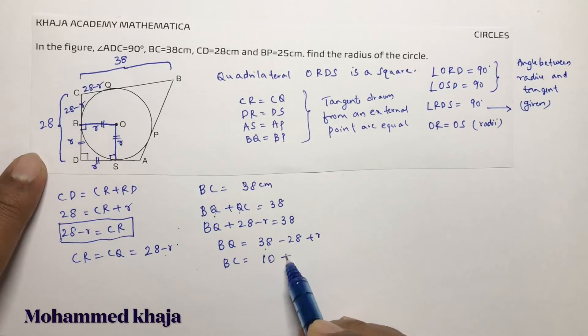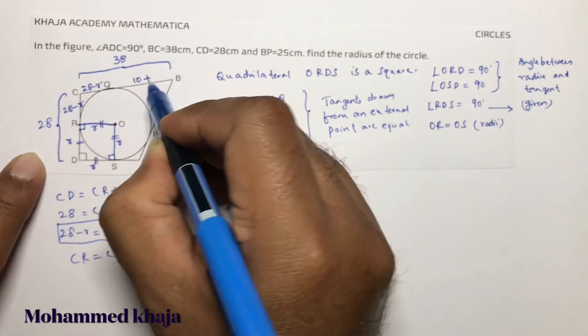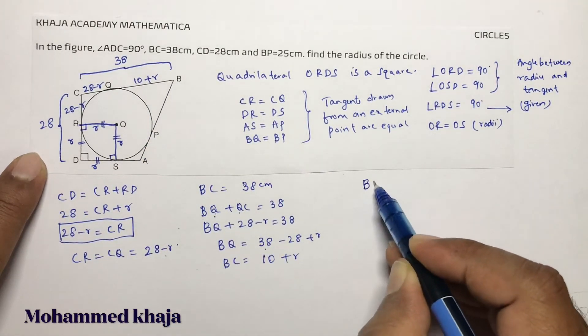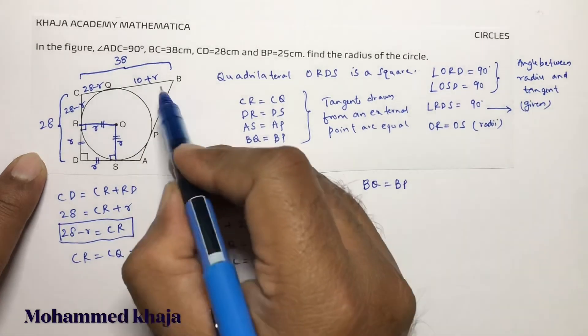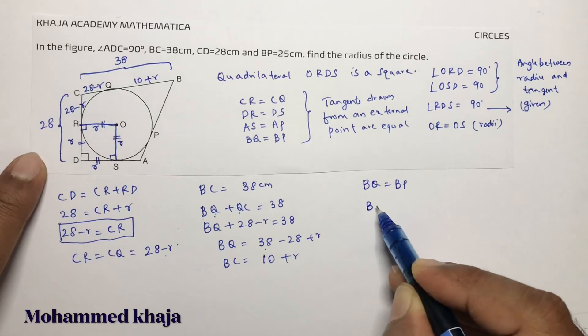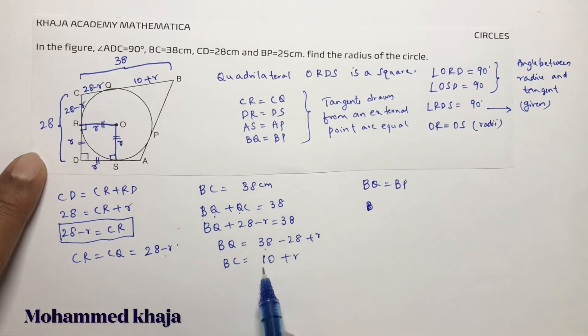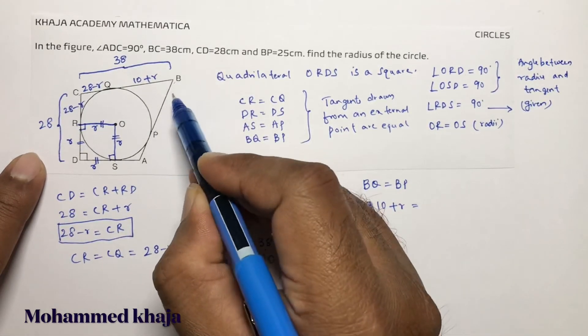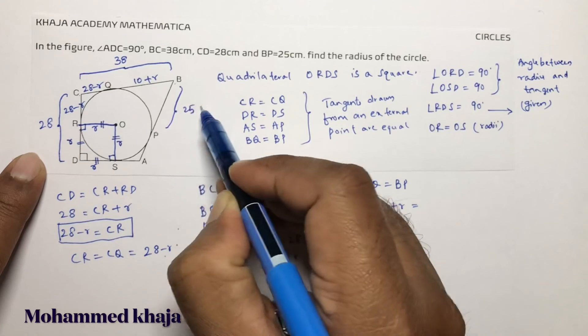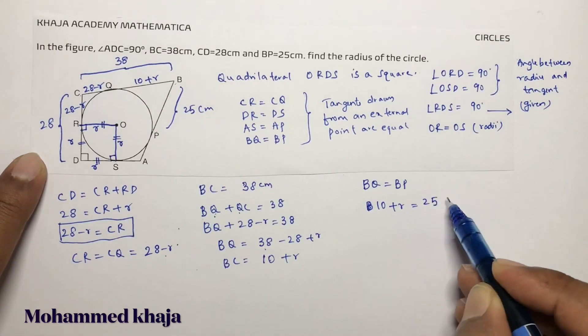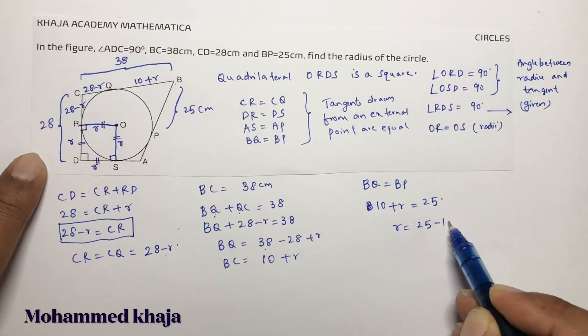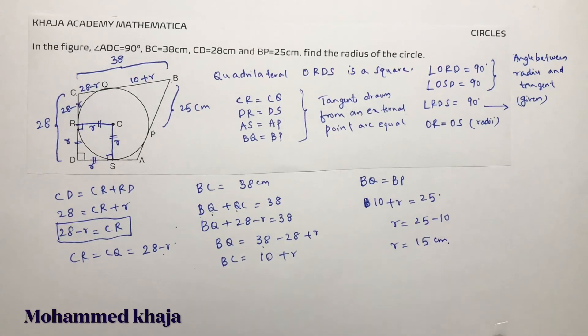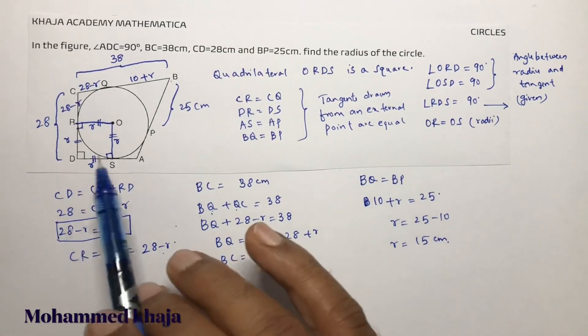So BQ equals 10 plus R. BQ equals BP because tangents drawn from external point. And BQ is given in the problem as 25cm. So BQ equals 25cm.